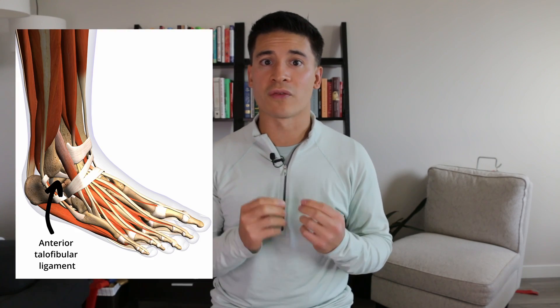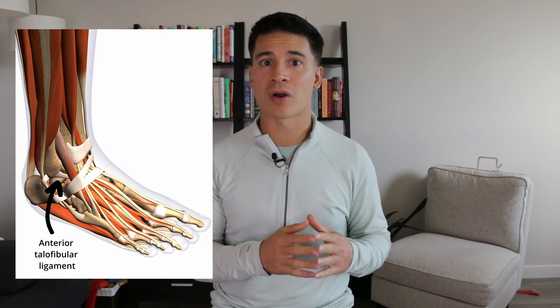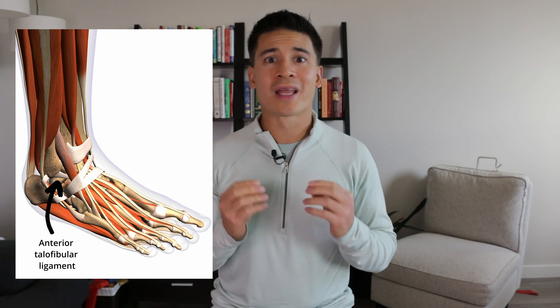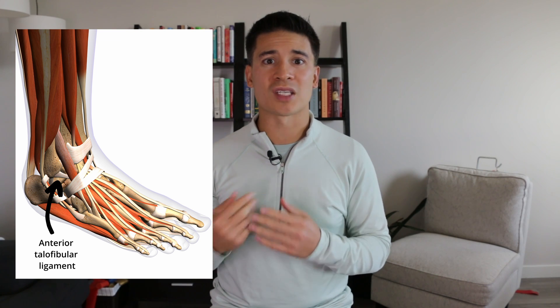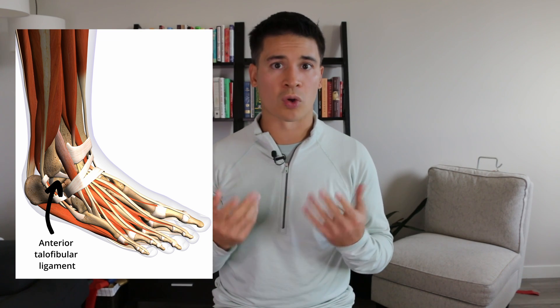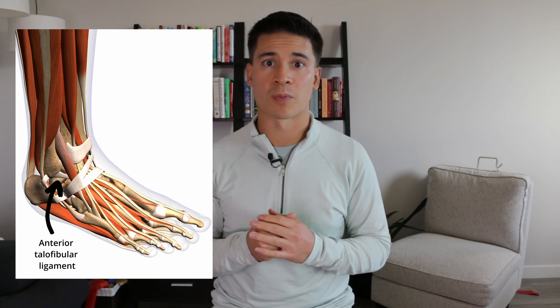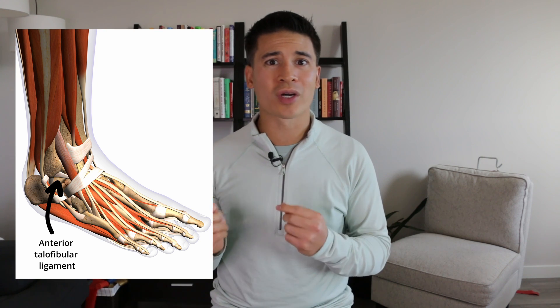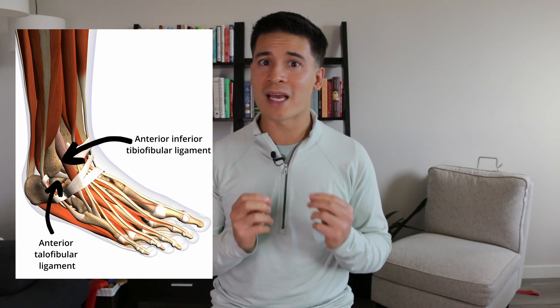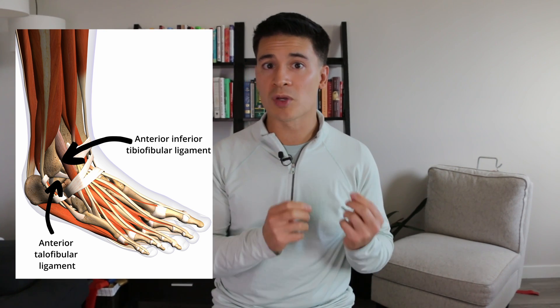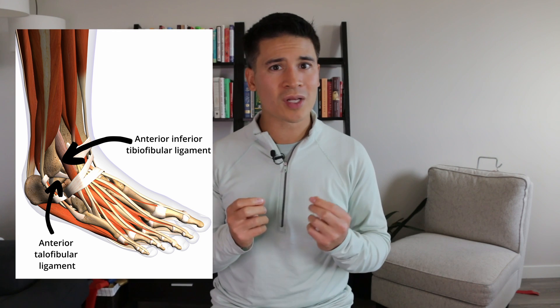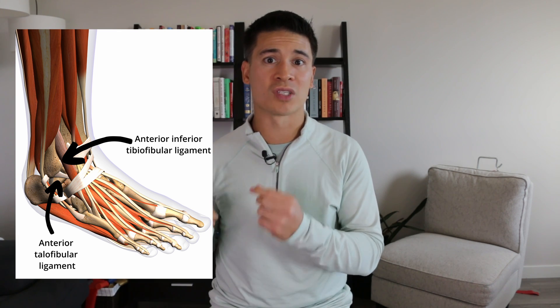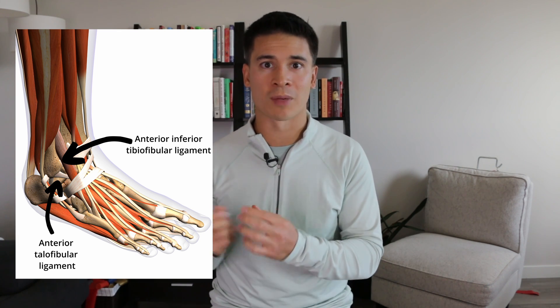If we take a look at some of the other ligaments around the ankle, we have the anterior talofibular ligament, which is on the outside part of the ankle. This is the ligament that's injured with an inversion ankle sprain, which is the more common ankle sprain. If we just take a quick look at the proximity, we can see that the anterior talofibular ligament is pretty close to the anterior inferior tibial fibular ligament.